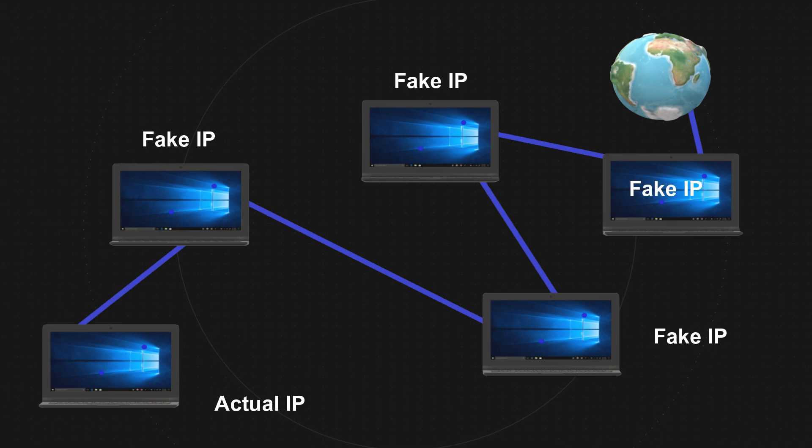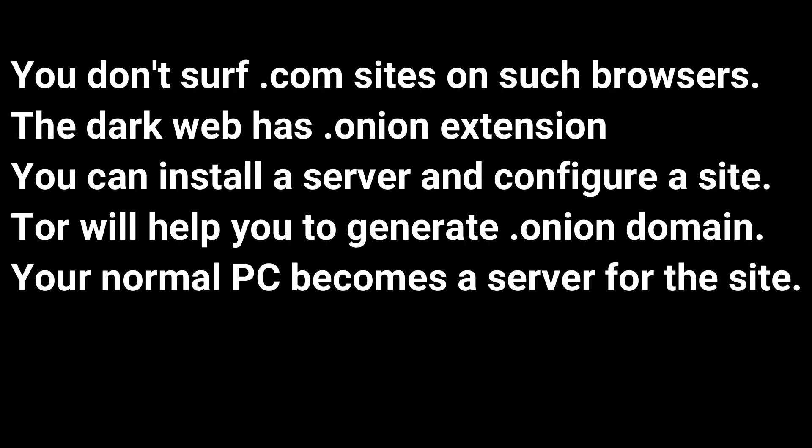Onion routing means it tries to mislead, generate lots of IPs, and also tries to use multiple VPNs before the request reaches the web. One thing is for sure — you don't browse dot-com sites on such browsers. The dark web uses the extension dot-onion, meaning the domain name will have a dot-onion extension.